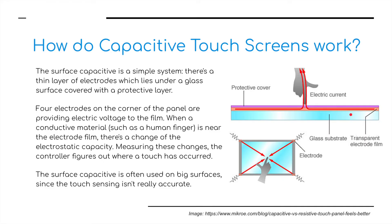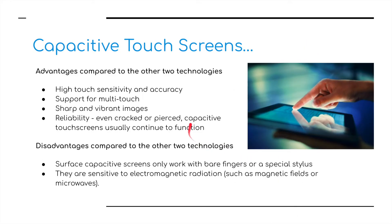Surface capacitive works with a thin layer of electrodes lying under a glass surface covered in a protective film. Four electrodes at the corners of the panel provide electrical voltage to the film. When a conductive material such as a human finger is near the electrode film, there is a change of electrostatic capacity. By measuring these charges, the controller figures out where a touch has occurred. Surface capacitive is often used on larger surfaces, but on small surfaces like smartphones or tablets it is very accurate.